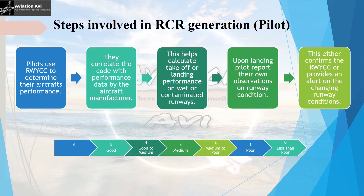What are the steps involved in RCR generation from the point of view of a pilot? Once the runway condition code or the RCR is disseminated to the pilot, they use this information to determine the aircraft's performance. They correlate the code with performance data provided by the aircraft manufacturer, which helps them calculate takeoff and landing performance on wet or contaminated runways. Upon landing, they report their own observations on runway condition, which either confirms the runway condition code or provides an alert on changing runway conditions.